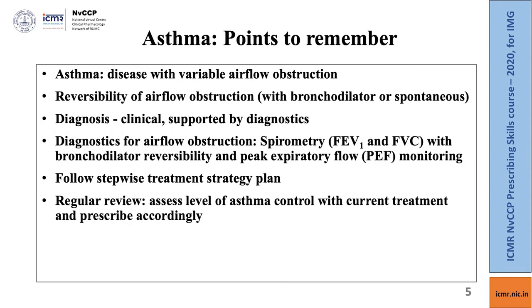For rational prescribing it is important to have knowledge about the disease, the drugs prescribed, and the treatment algorithms being followed. Asthma is a disease of variable airflow obstruction — reversibility of airflow obstruction is its hallmark, occurring either spontaneously or following a bronchodilator. Diagnosis is essentially clinical and supported by spirometry. The key spirometry parameters are FEV1 (forced expiratory volume in the first second), FVC (forced vital capacity), and demonstration of bronchodilator reversibility. At home, patients may be asked to monitor peak expiratory flow rate to understand day-to-day variation in airway obstruction.